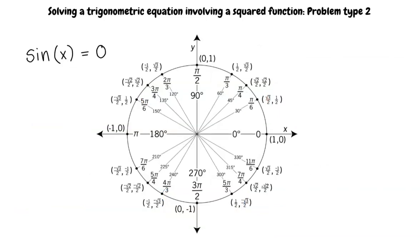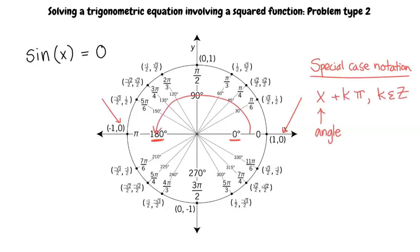This is because sin of 0 equals 0 and sin of pi equals 0. Therefore, instead of writing 2 k pi, we would only write k pi, because in these special cases, the coterminal angles are at pi.